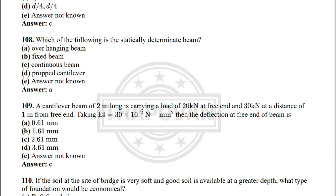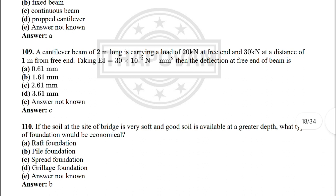Next: which of the following is the statically determinate beam? — the correct answer is option A: overhanging beam. Next: a cantilever beam 2 m long carries a load of 20 kN at free end and 30 kN at a distance of 1 m from the free end, taking EI = 30 × 10¹² N·mm². The deflection at the free end is — the correct answer is option C: 2.61 mm.